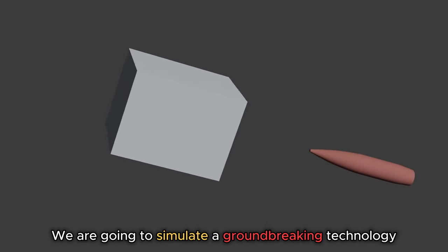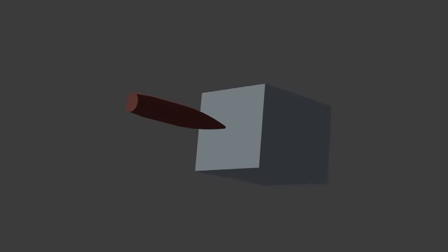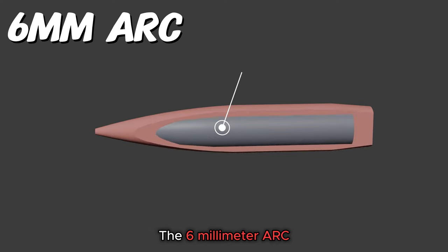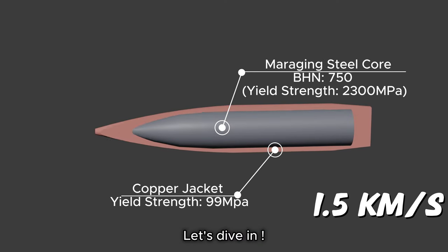We are going to simulate a groundbreaking technology against different types of heavy armor and see how it performs. Picture this: the 6mm ARC, modified for an electro-thermal chemical rifle. Let's dive in.